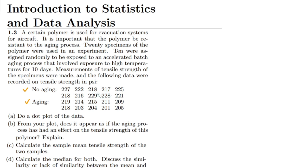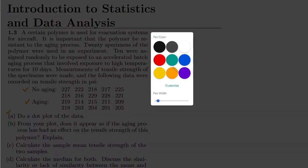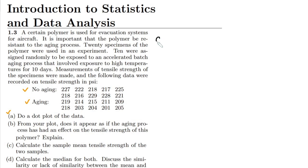This data is for non-aging and aging as well. These are the 10 specimens for the aging and non-aging tensile strength of the polymer. So what is part a? Today we will concentrate on a dot plot of the data. Here we have this data for the aging and non-aging.